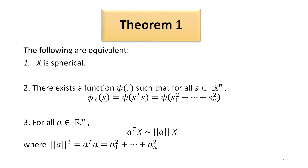Let us look at Theorem 1, which is very important. Suppose we have an x vector which is a random vector and it has the spherical distribution. Then, x having a spherical distribution is equivalent to stating that there exists a function chi such that for all vector s belonging to the n-dimensional real space, the characteristic function of x, that is phi_x(s), is equal to chi(s-transpose s), that is chi(s1² + s2² + ... + sn²), where the vector s has components s1, s2, ..., sn.